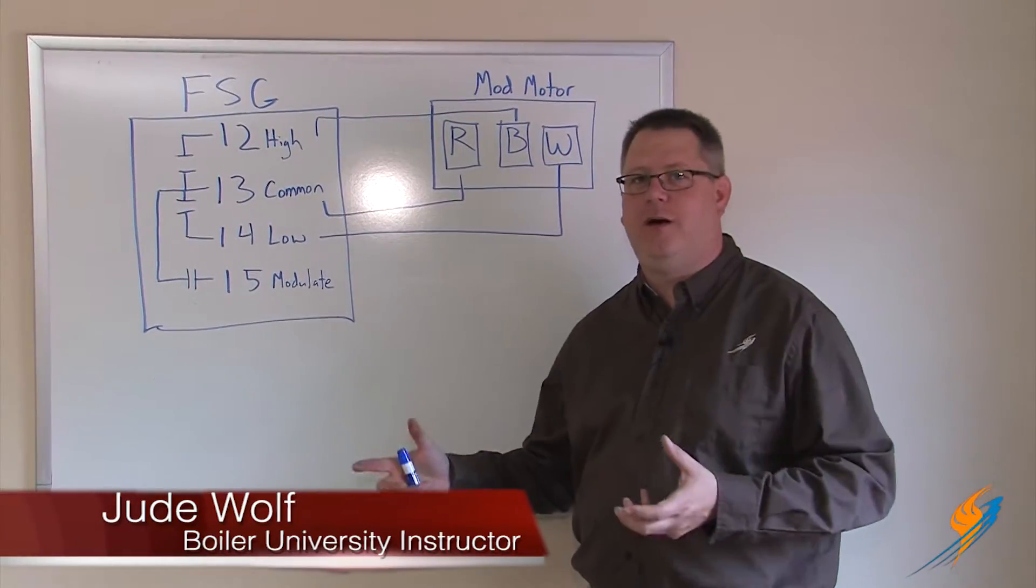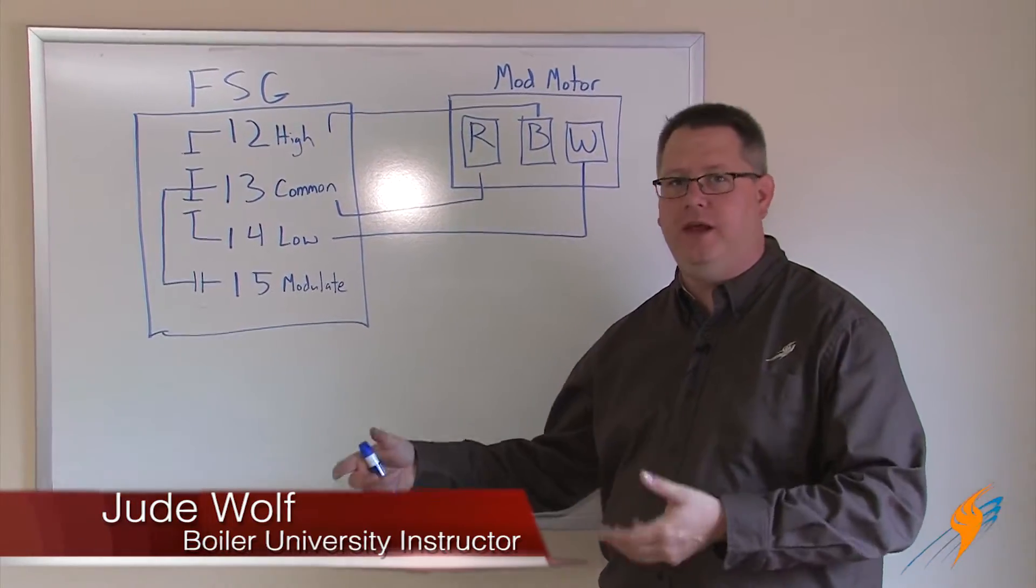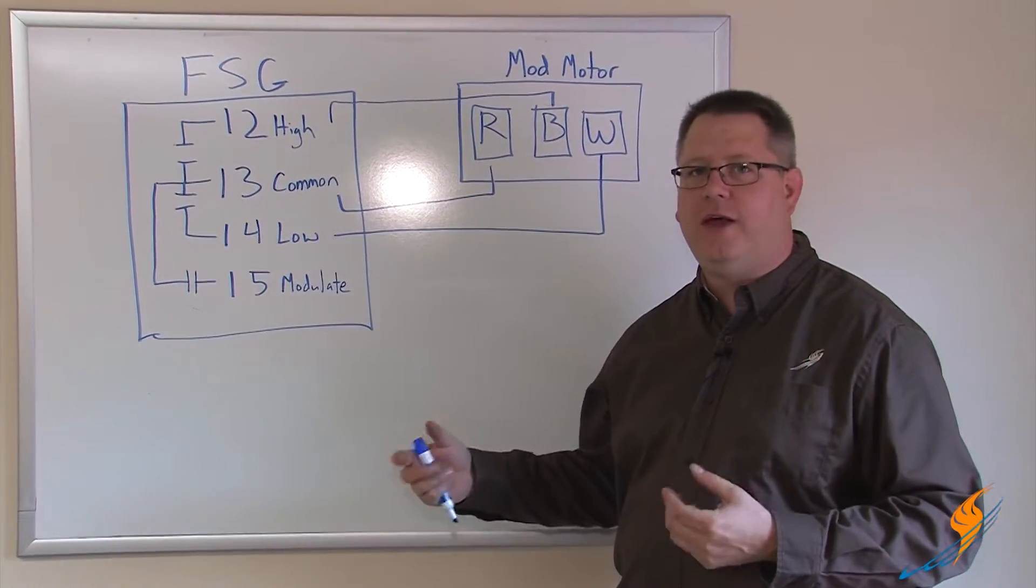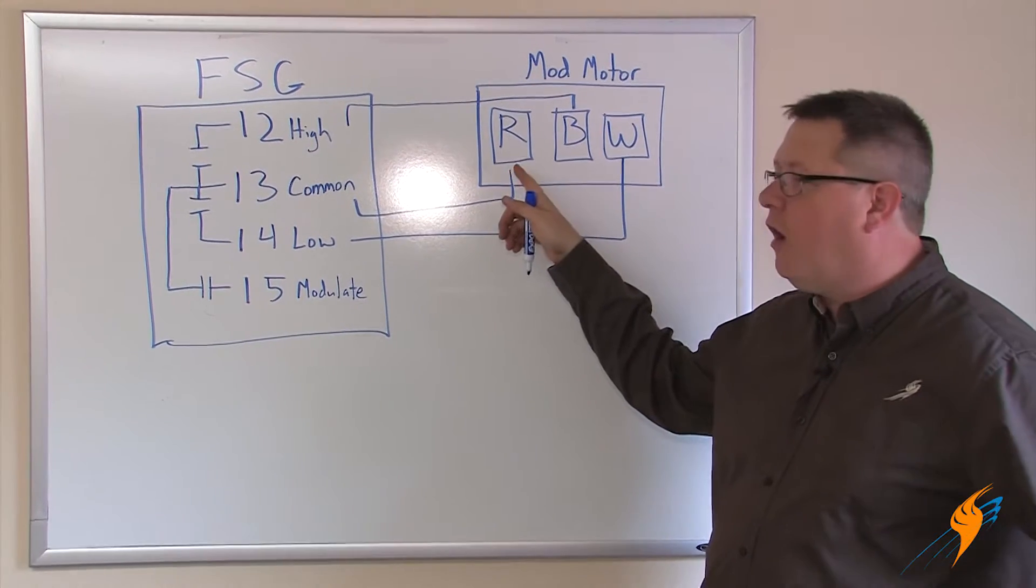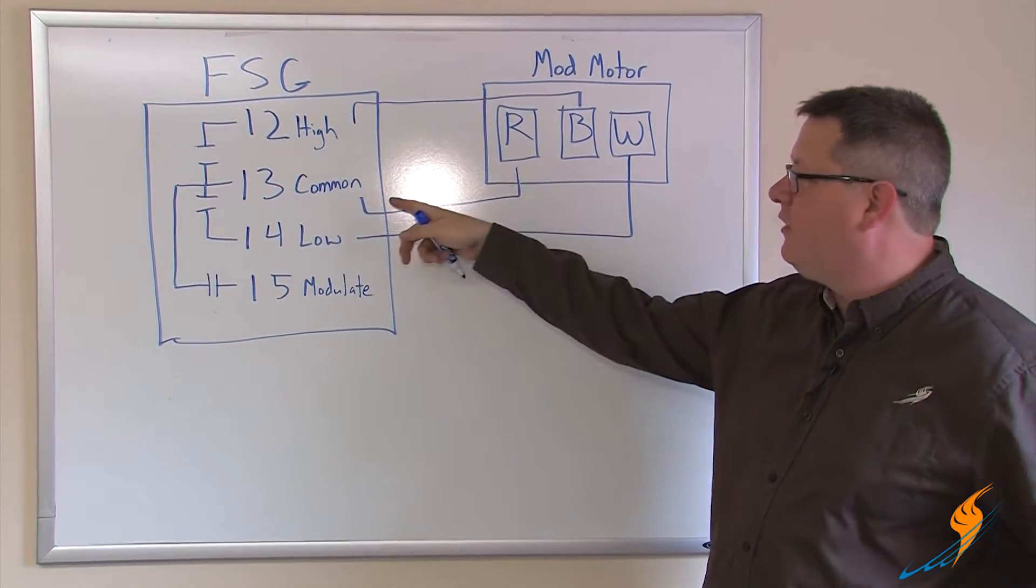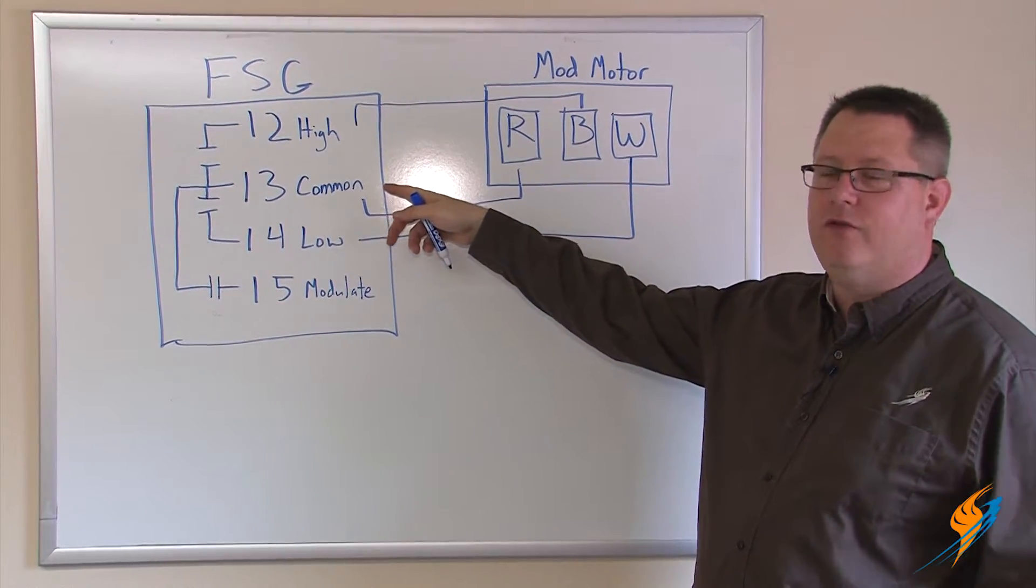Just as I physically jump with wires, the R, B, and W terminals, the flame safeguard is doing the same thing with its internal contacts. The R terminal from the mod motor is connected to the common terminal of the flame safeguard.